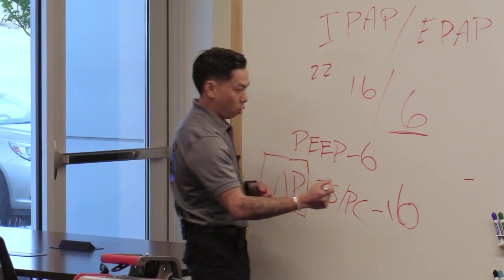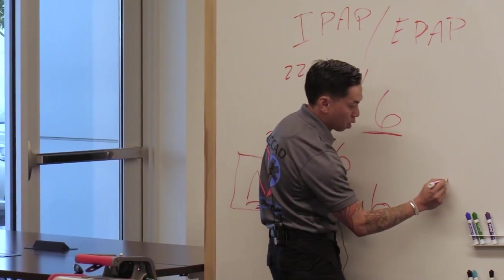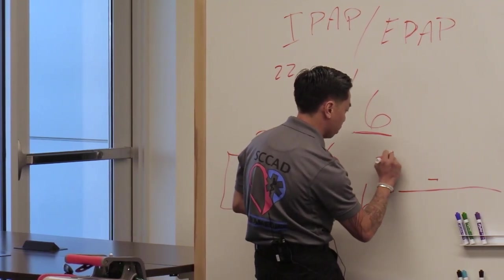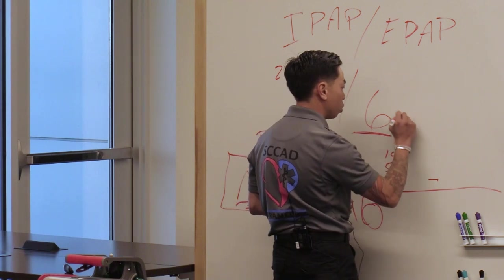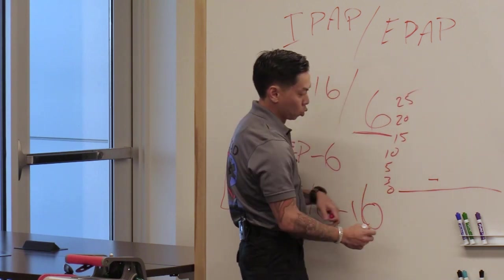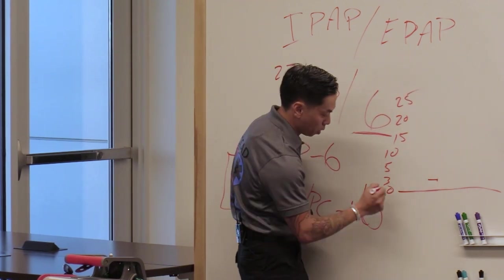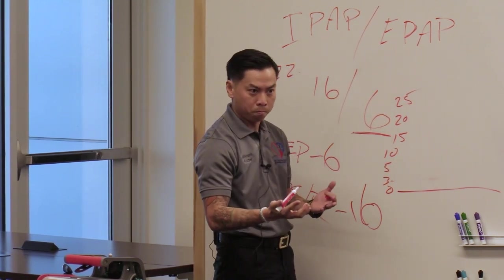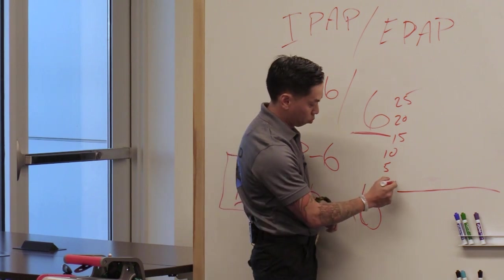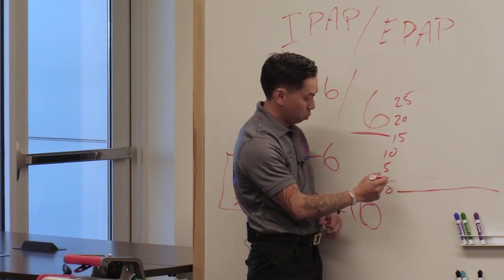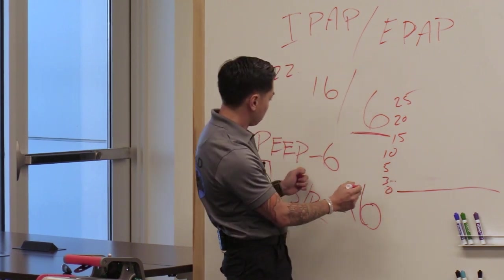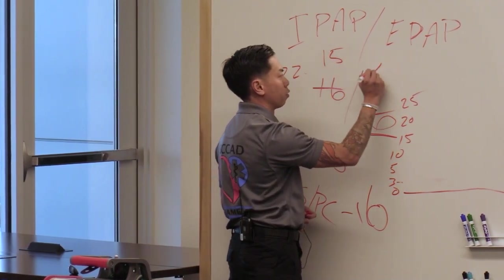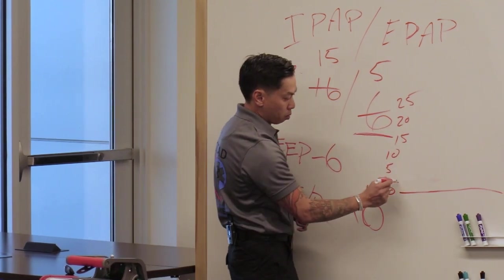So it would start off like this, low 6. So 0, 3, 5, 10, 15, 20, 25. So pressure and time. The patient starts off at 3 intrinsic, or we put them on BiPAP and we set, let's say our pressure is 15 over 5. So we put the BiPAP mask on, automatically we go up to 5.